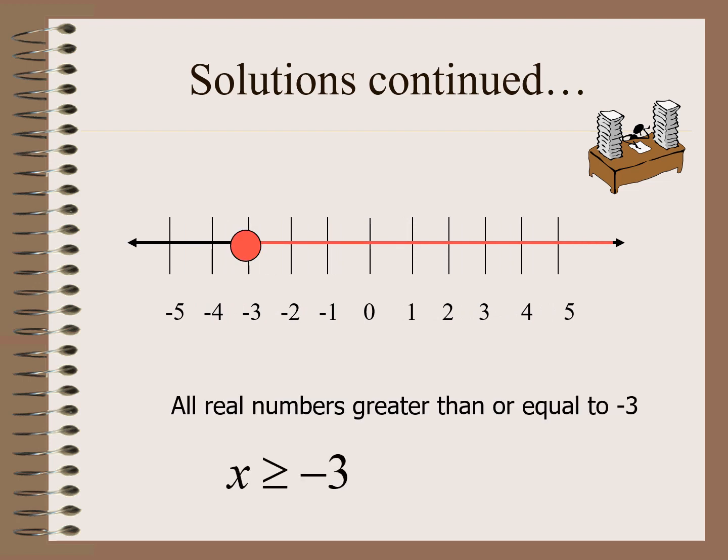Now let us have the inequality x is greater than or equal to negative 3. We are going to use a closed dot, and then the direction is going to the right because it is greater than. The solution is all real numbers greater than or equal to negative 3, so negative 3 is included.